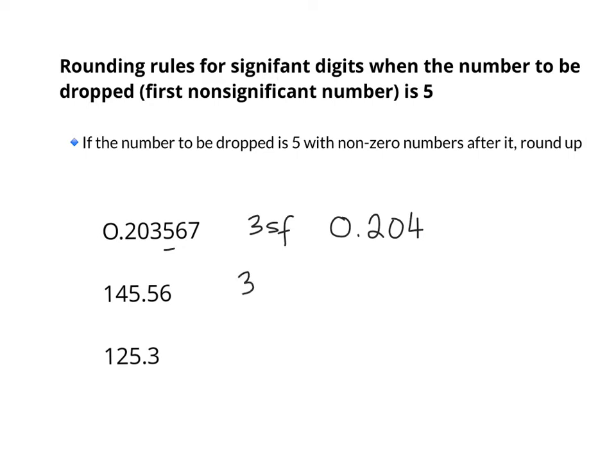1.4556 — round this to 3 significant figures. The 5 and the 6 are to be dropped; 5 is the first one. So this gets rounded off to be 1.46.